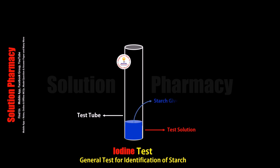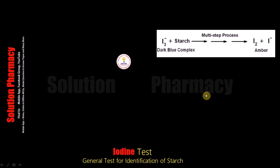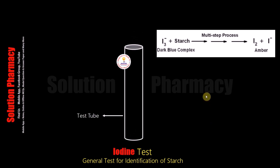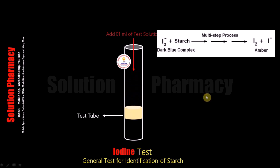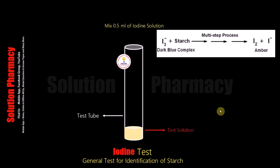Now let's see how the iodine test is performed. First of all, we have to take a test tube and then add 1 ml of test solution in the test tube. Test solution means the sample in which we have to detect the presence of starch. Then add 0.5 ml of iodine solution into the test tube with the help of a pipette.